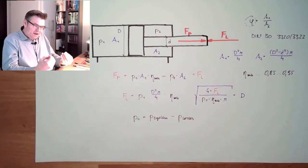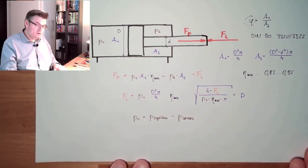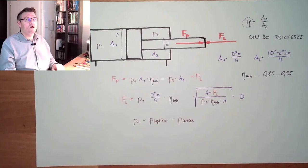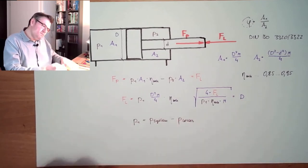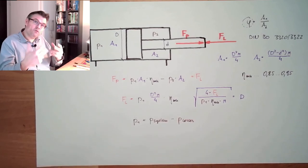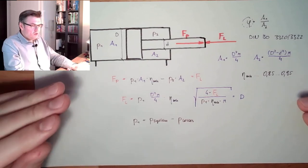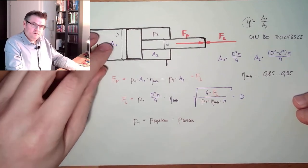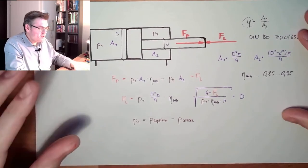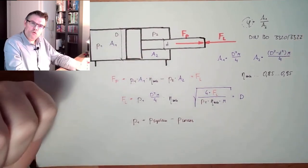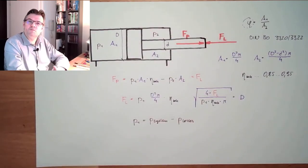If in the end I realize that the losses are higher than I thought, then I have to do it over again and adapt a little bit — it is an iterative process. So now we have the cylinder designed from the viewpoint of forces; the cylinder should be strong enough to overcome the forces we expect, giving a certain diameter.